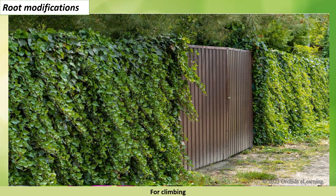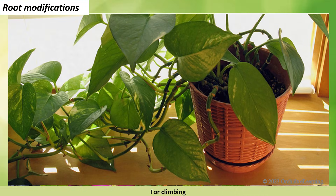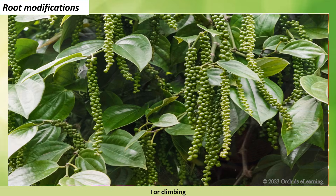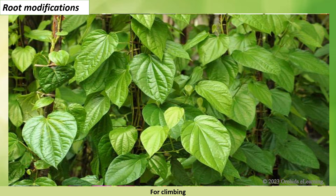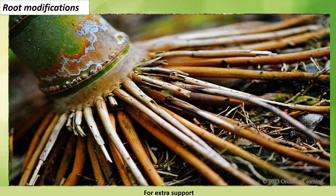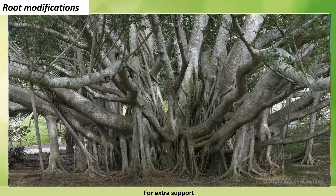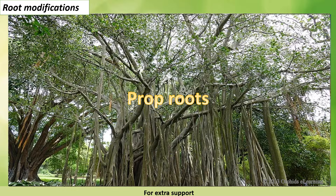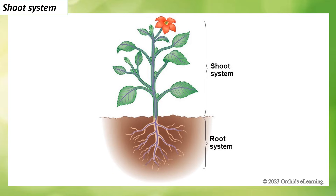For climbing: some plants have climbing roots that help the plant to climb up supports such as walls, rocks, and trees — examples are money plant, black pepper, and betel. For extra support: roots of plants such as bamboo, sugarcane, and banyan give out extra roots from their branches. These roots grow downwards and give extra support to the stem of the plant; these are called prop roots.